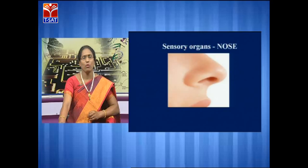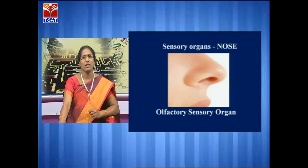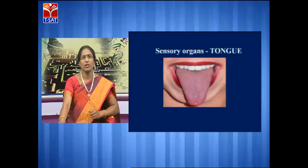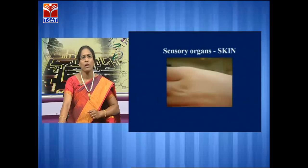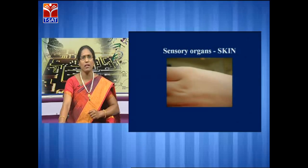Next, we have the nose. What will the nose do? The nose will help us to smell — and we have already seen an example where we closed our nose when moving by a dump yard. So it is an olfactory sensory organ. Next, the tongue — it will help us to sense taste. Different tastes are tasted with the help of the tongue, so it is a gustatory sensory organ. Next, we have skin. Skin helps us feel touch, pain, pressure, and the difference in temperature — that is hotness or coldness. So altogether, skin is a tactile sensory organ.